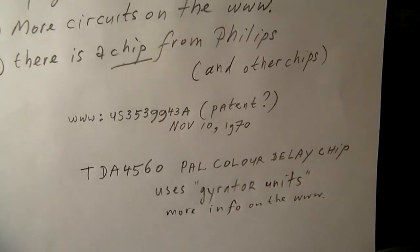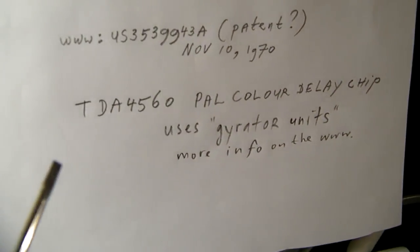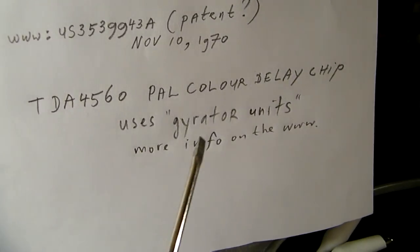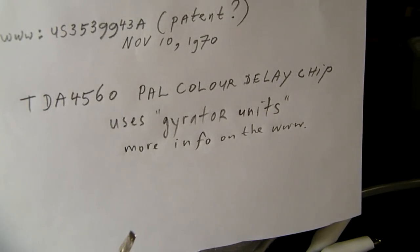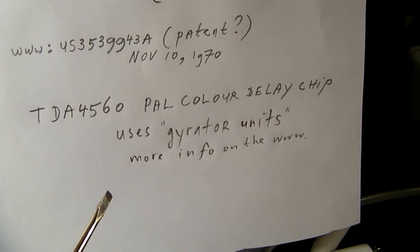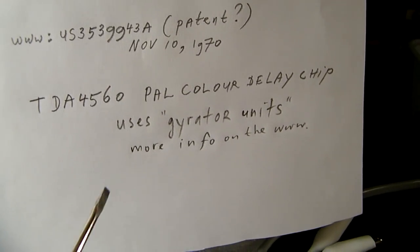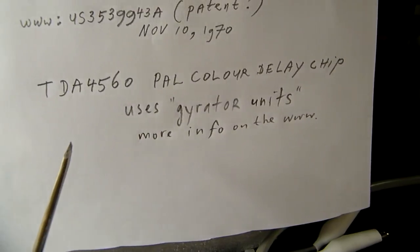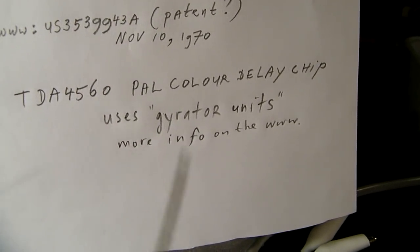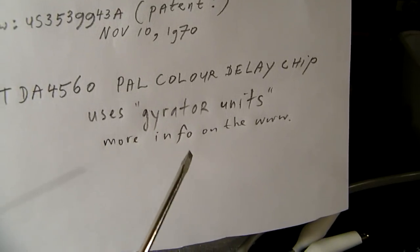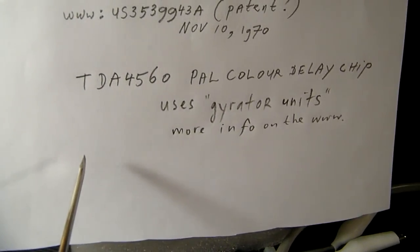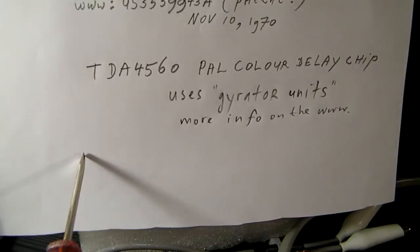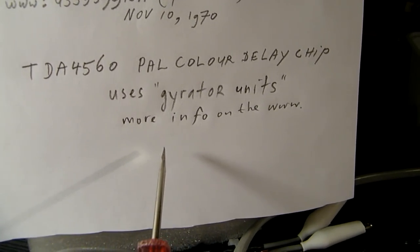This chip here, the TDA4560 PAL color delay chip, uses gyrator units inside to create a time delay — the time between the moment a signal comes in and when it comes out. A gyrator simulated inductor can help to achieve this. For instance, a signal in and after say 10 microseconds it has to come out of the chip, and that's what this circuit does.